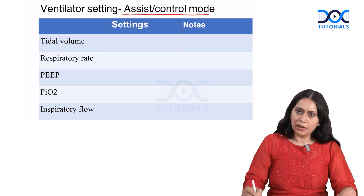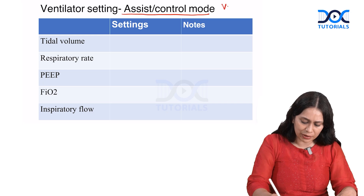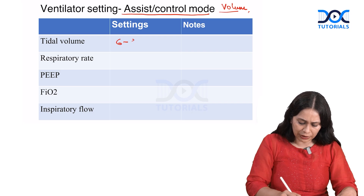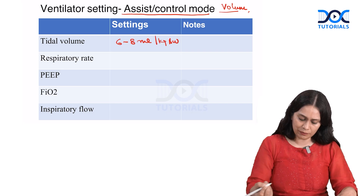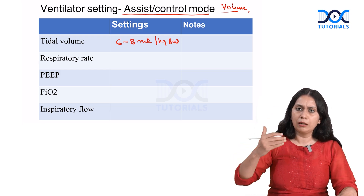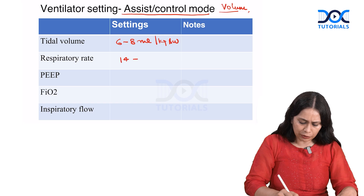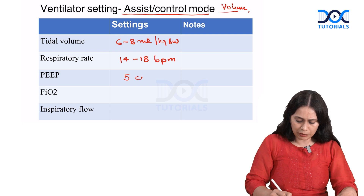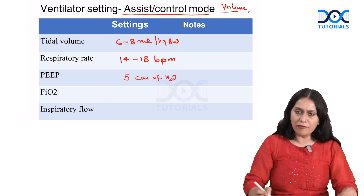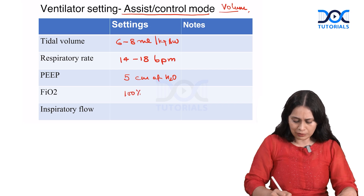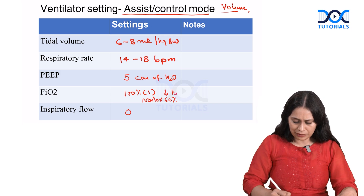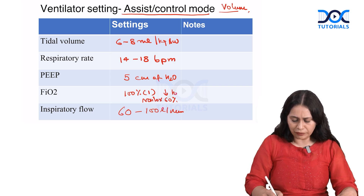For the settings of volume assist control: tidal volume is fixed at 6 to 8 ml per kg body weight. Respiratory rate is set near to the patient's pre-ventilator rate, normally 14 to 18 breaths per minute. PEEP (positive end expiratory pressure) is started at 5 cm of water and can be increased as required. FiO2 is started at 1 (100%) and decreased to a non-toxic level of 60% as soon as possible. Inspiratory flow is kept between 60 to 100 liters per minute.